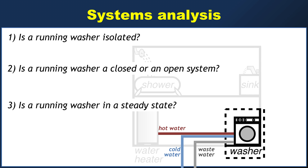So you have your water pipes connected and you hit start and nothing happens, because of course you also need to plug in your washer. So I can think of four connections with the outside world for this system — three of which involve water and one of which involves power.